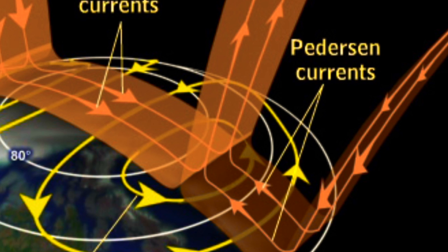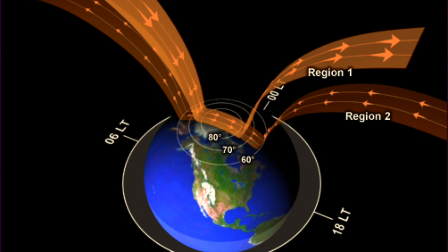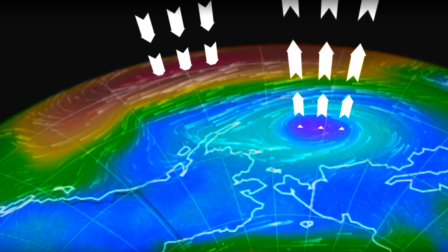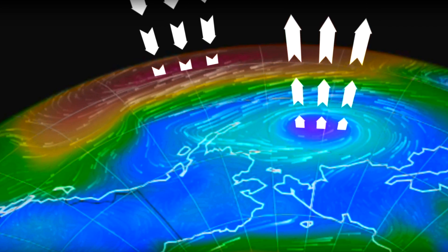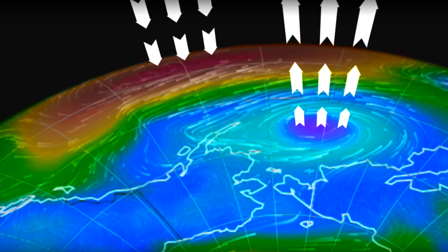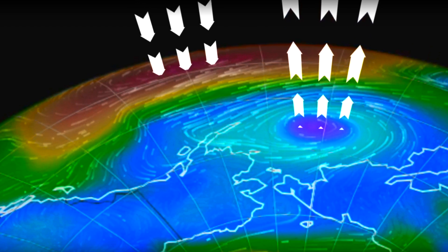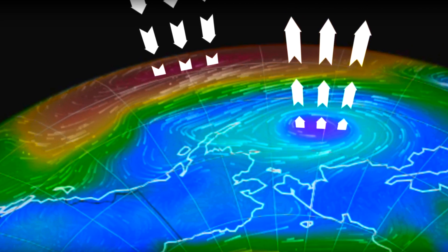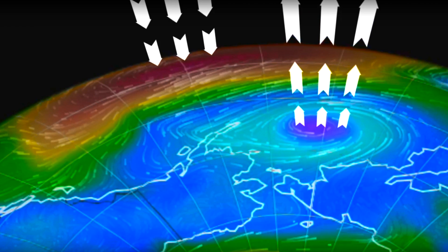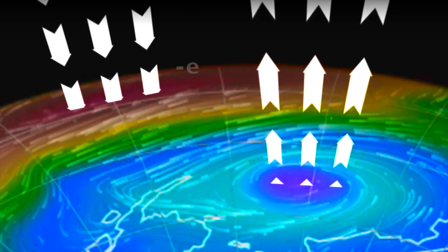Now let's look at some differences between this level and the lower global electric circuit. At the geospace level, the currents come in as sheets, much like as is shown. At the Pedersen side currents, they are also flat sheets going directly across. Now, the up and down in the global electric circuit is actually not straight and not a sheet, but it's spinning with the wind in a helix — a vortex up and down, largely tied to water vapor and ions in the atmosphere.